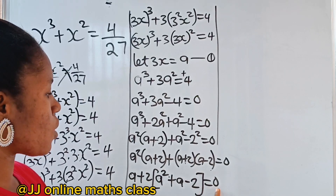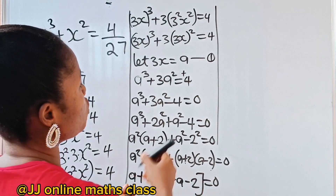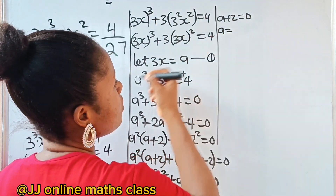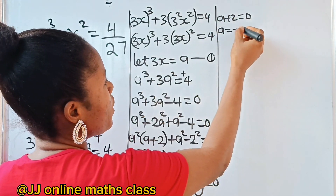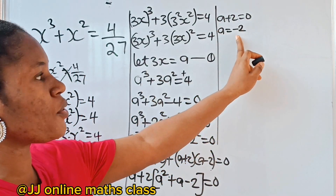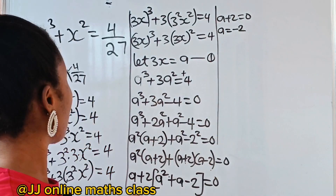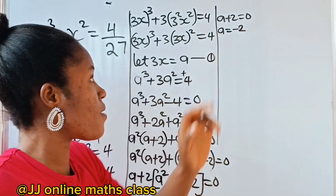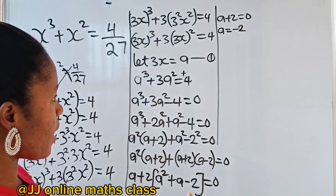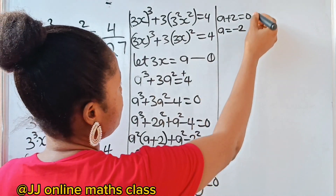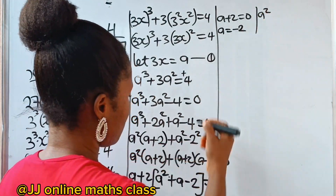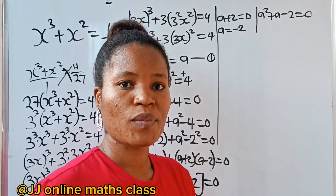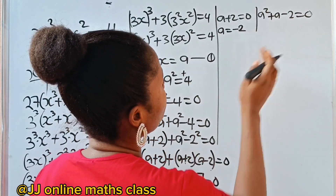From this factored form, we can say a + 2 equals zero, which gives us a equals −2. That is the first value of a. For the other factor, we have a² + a − 2 equals zero.